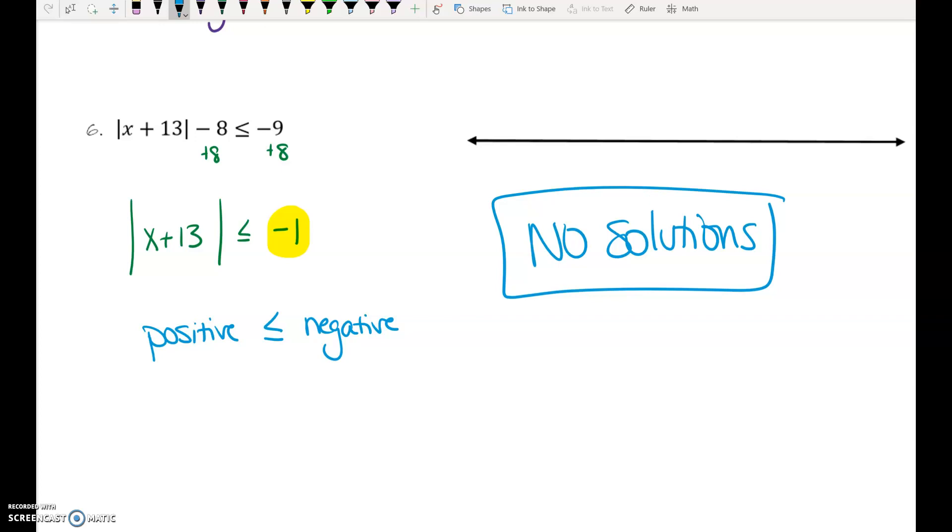If that symbol was flipped around, then it would be possible because positive numbers are bigger than negative numbers. I want you to think about this statement and think about is this true or false? This is a false statement. That means no solutions.